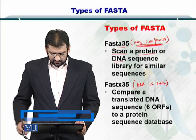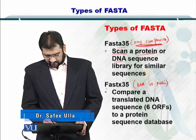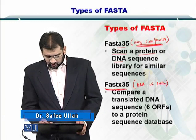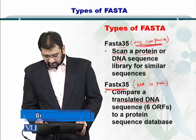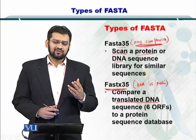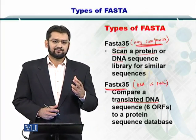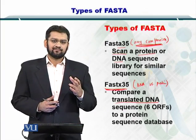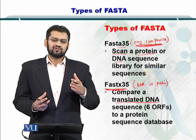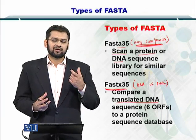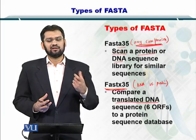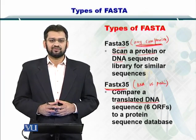The next type of FASTA is the FASTX35. This can help you to compare the translated DNA sequence to a protein sequence database. So on one side you have a DNA sequence as your query, and on the other side you have a protein database. All six open reading frames are calculated by looking at the DNA or the RNA sequence, and then they are converted into a protein for comparison.